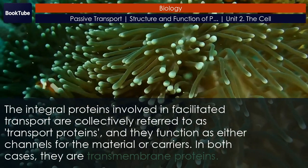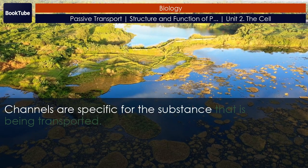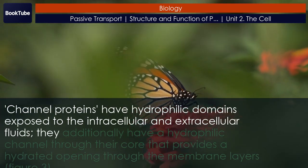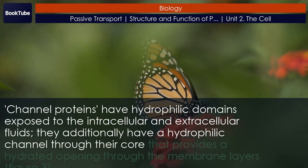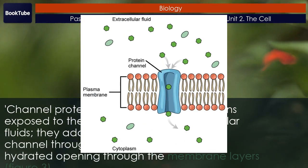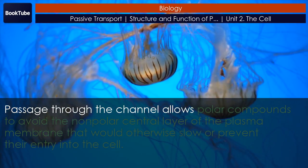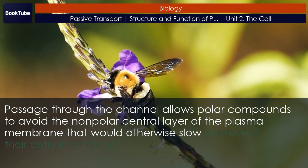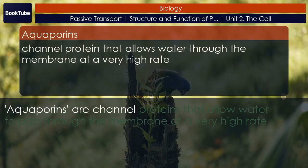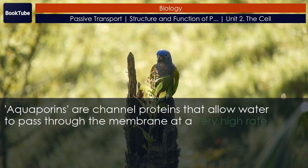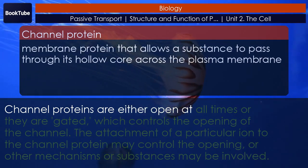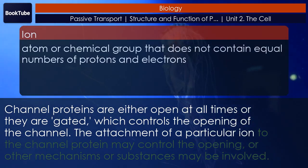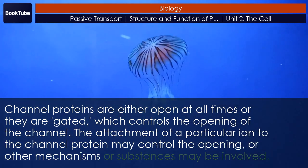In both cases, they are transmembrane proteins. Channels are specific for the substance that is being transported. Channel proteins have hydrophilic domains exposed to the intracellular and extracellular fluids. They additionally have a hydrophilic channel through their core that provides a hydrated opening through the membrane layers. Passage through the channel allows polar compounds to avoid the nonpolar central layer of the plasma membrane that would otherwise slow or prevent their entry into the cell. Aquaporins are channel proteins that allow water to pass through the membrane at a very high rate. Channel proteins are either open at all times or they are gated, which controls the opening of the channel. The attachment of a particular ion to the channel protein may control the opening, or other mechanisms or substances may be involved.